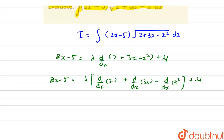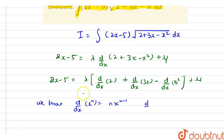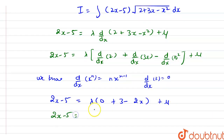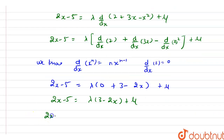We know that d/dx of x raised to power n is equal to n into x raised to power n minus 1, and the derivative of any constant is equal to 0. So from here we have 2x minus 5 equal to lambda into (0 plus 3 minus 2x) plus mu. After solving further, 2x minus 5 equals lambda into (3 minus 2x) plus mu, which gives 2x minus 5 equals 3lambda minus 2lambda·x plus mu.